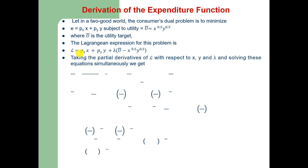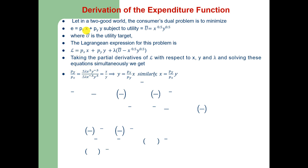Taking partial derivatives of the Lagrangian with respect to X, Y, and λ and solving the three equations simultaneously, we equate the marginal rate of substitution to the price ratio. Specifically, Py/Px equals the marginal utility of X divided by the marginal utility of Y. The marginal utility of X is 0.5·X^(−0.5)·Y^0.5 and that of Y is 0.5·X^0.5·Y^(−0.5), so simplifying gives Py/Px = Y/X, which means Y = (Px/Py)·X and X = (Py/Px)·Y.